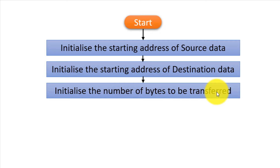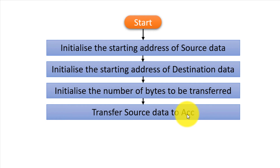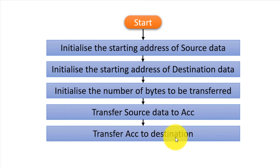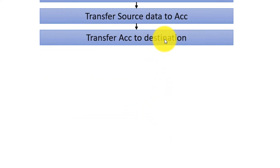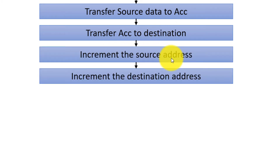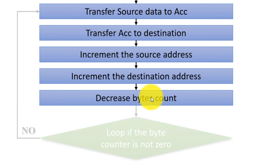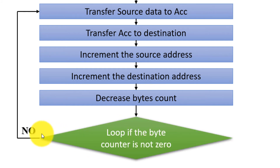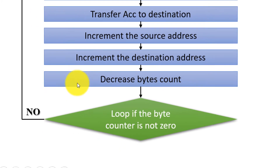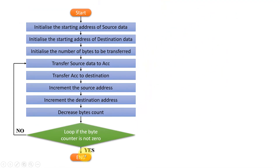In some R register we put the value 10, because we have 10 data bytes to transfer. Then we transfer the source data to the accumulator, then copy the accumulator to the destination address. After that we manipulate the addresses — increment source address and destination address — then decrease the byte counter. If it is not zero, we go back for the next transfer; if it is zero, we stop the program.